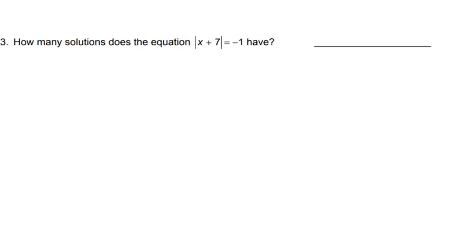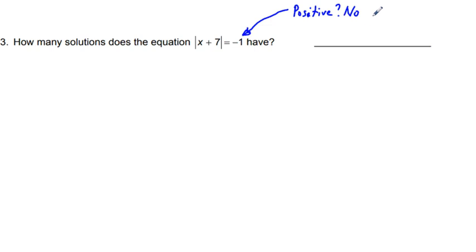Next, problem 3: how many solutions does the equation absolute value of quantity x plus 7 equals negative one-half have? We look at the number on the right side and ask: is it positive? No. So it does not have 2 solutions. Is it negative? Yes. So there are no solutions — 0 solutions.